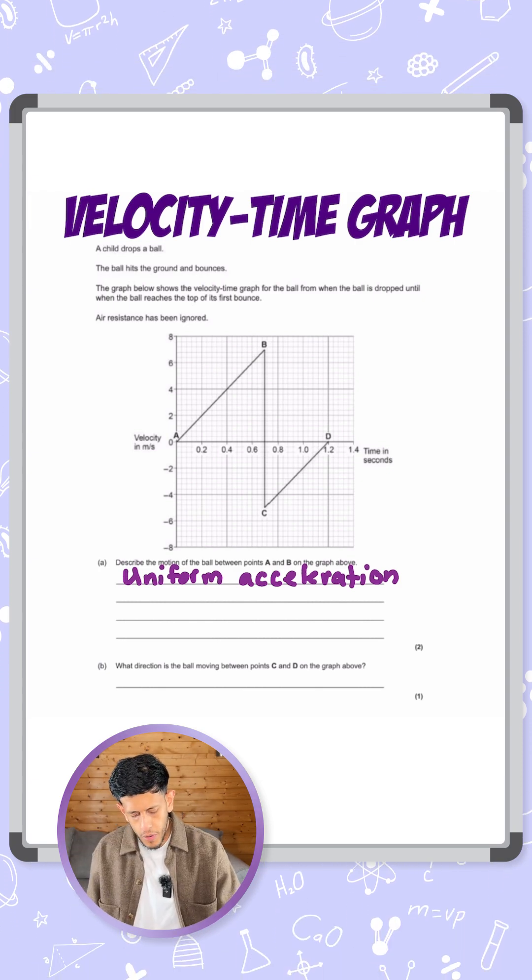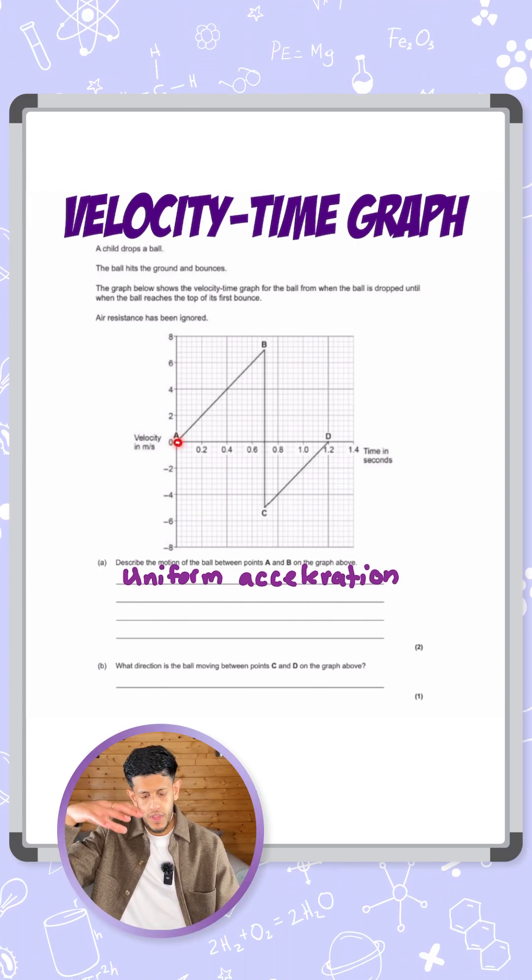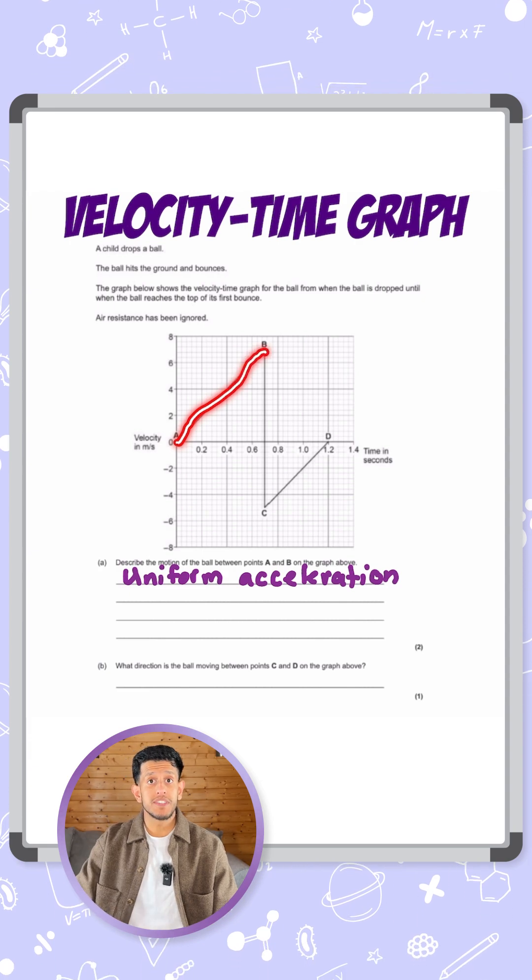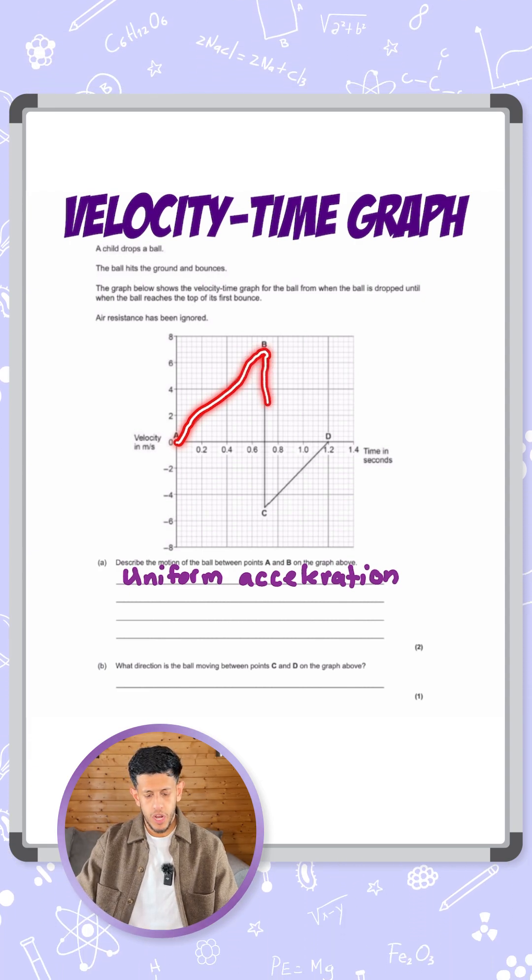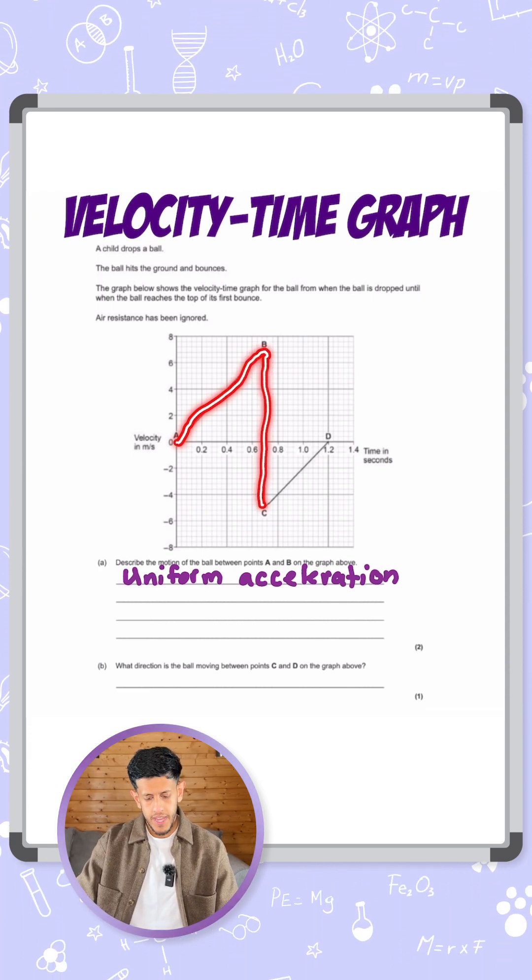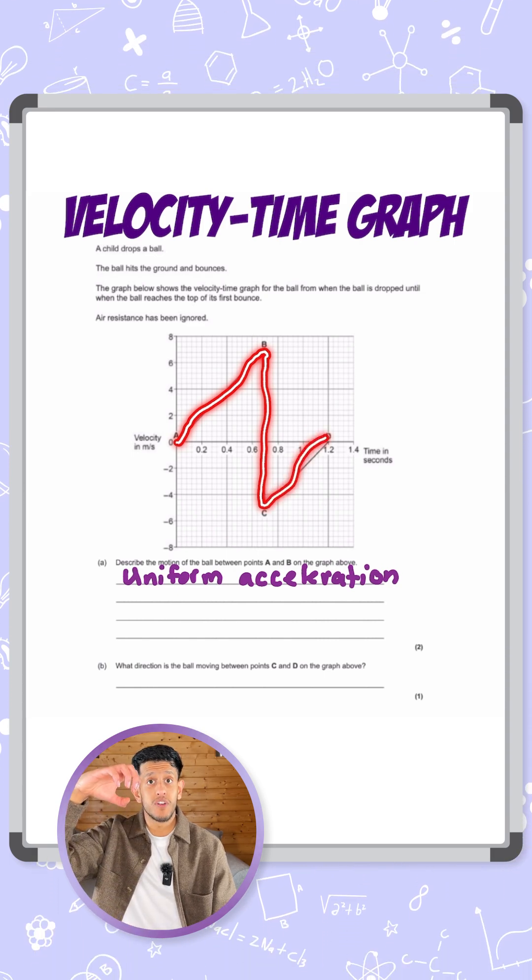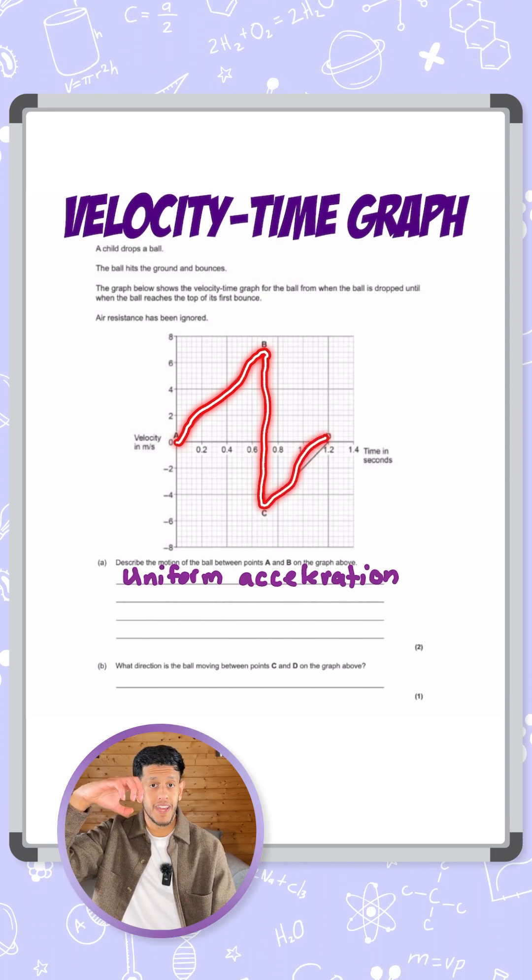So let's follow that with the graph on my hand to show the path of the ball. Starting from A, we're at the top, we then let go of the ball, it falls, and at B it reaches the ground, which is why you get this sharp line straight downwards. It then goes and bounces up and stops or reaches zero meters per second when it reaches maximum height again at D.